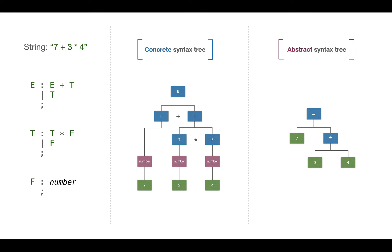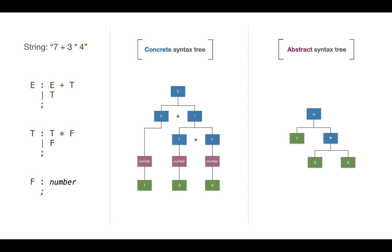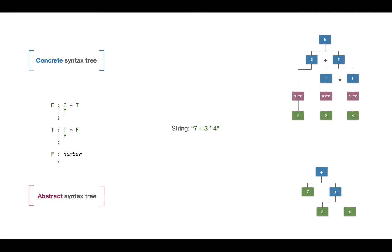In this class, building a tree to pass later to the interpreter, we'll be looking for something like what's on the right-hand side — that is, the abstract syntax tree. In a CST, interior nodes represent the actual productions from our grammar, matching one-to-one: we see E plus T, T times F, and E itself. The leaves represent the terminals — the actual final string values such as seven, plus, three, times, and four.